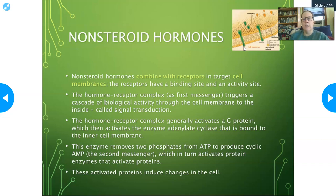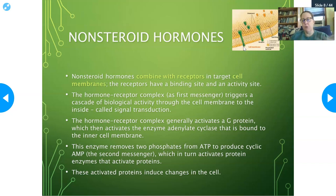The cascade of reactions that happen within the cell as a result of a non-steroid hormone binding to the cell receptor is called transduction. Generally, it involves activation of a G-protein, which then activates adenylate cyclase, which removes two phosphates from ATP, produces cyclic AMP, and that in turn activates protein enzymes to cause production of enzymes, chemical reactions, and so on. The proteins produced induce changes in the cell.